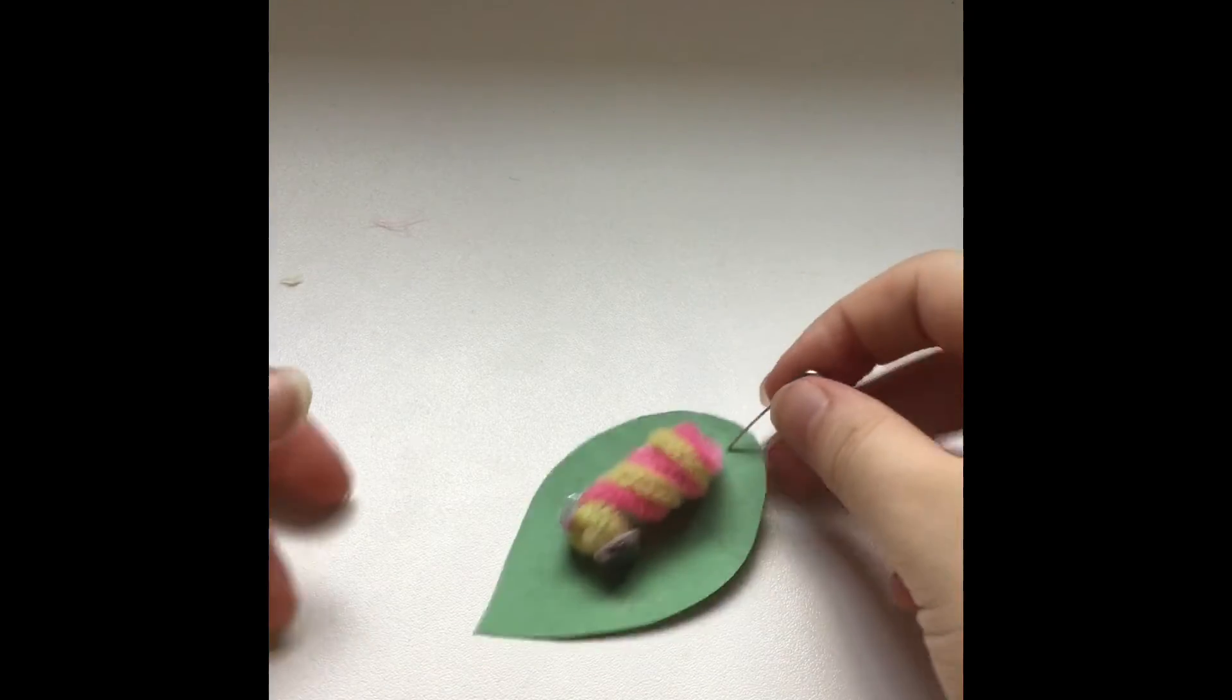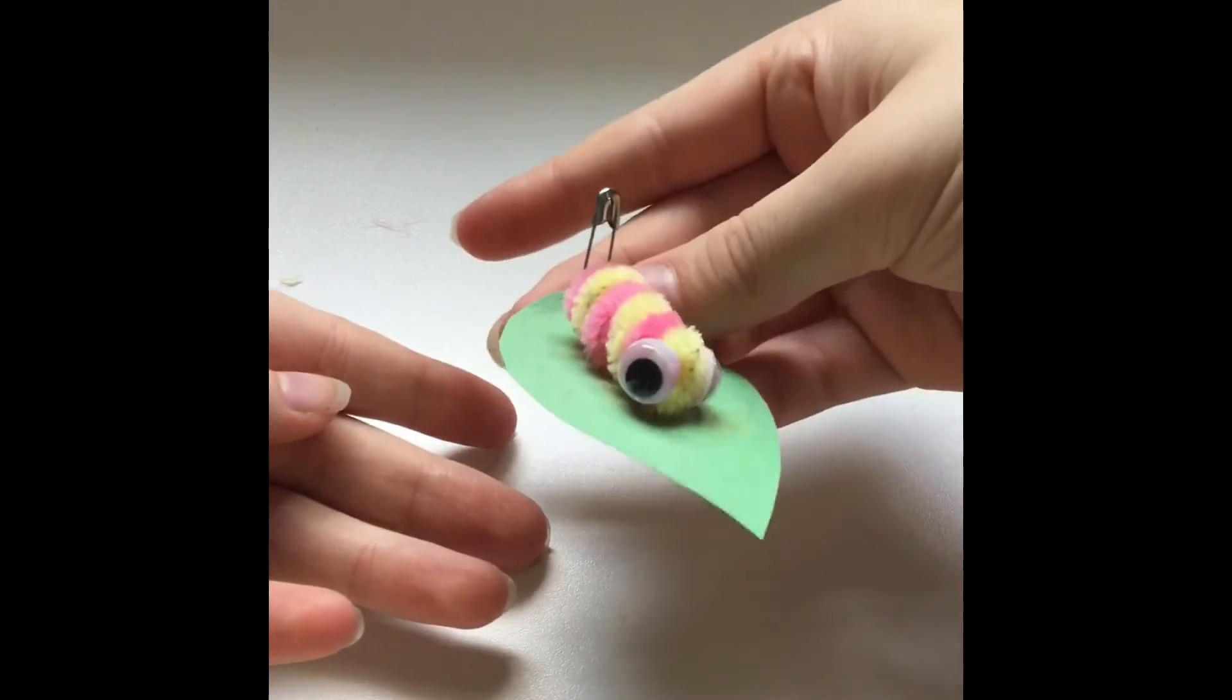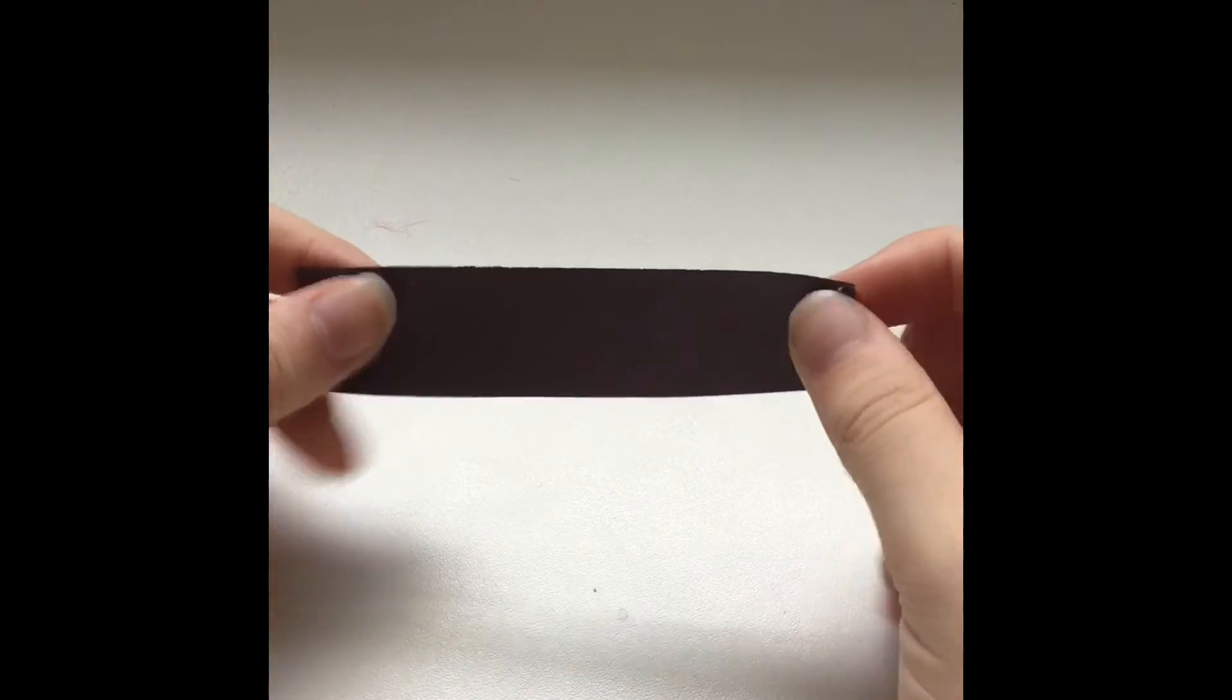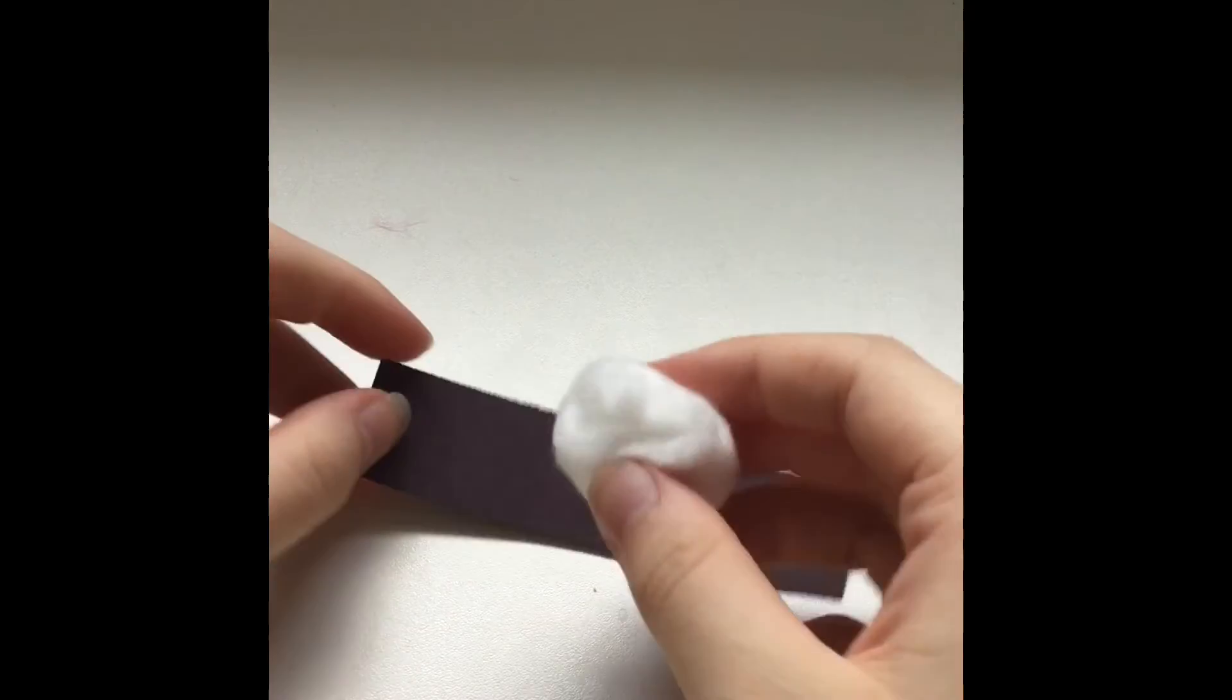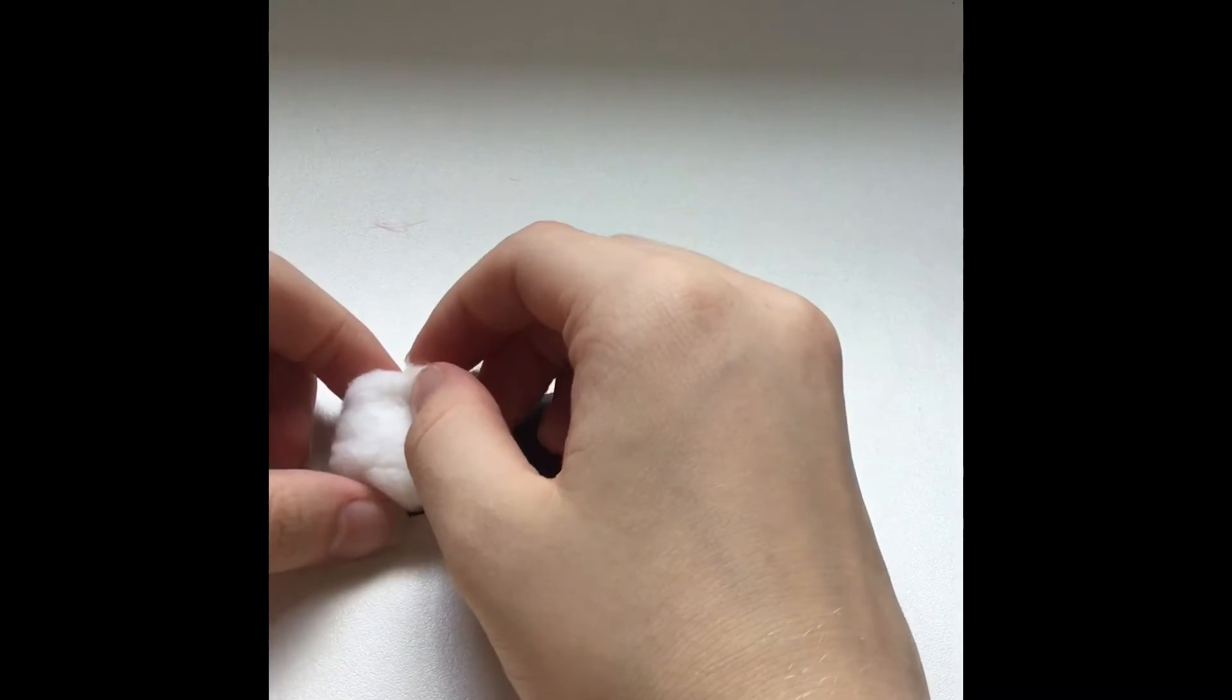And once you're done, your caterpillar should look like this. Now, to make the piece of sushi, you're going to have to take a black strip of paper and your cotton ball. You're going to take your cotton ball.